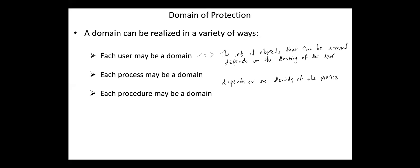And each procedure may be a domain. In this case, the set of objects that can be accessed corresponds to the local variables defined within the procedure. Here, domain switching occurs when a procedure call is made. We will discuss domain switching in more detail in the next videos.